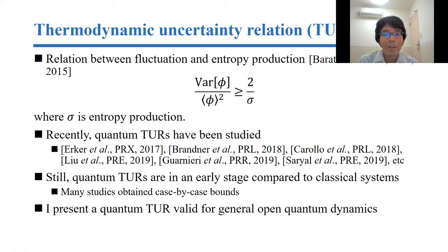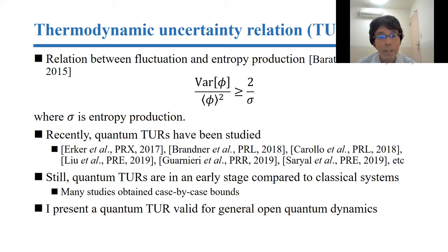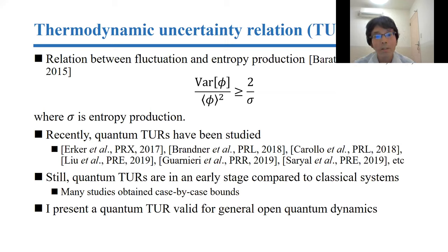As Takahiro introduced, thermodynamic uncertainty relation, TUR for short, is a relation about the fluctuation of current and entropy production. Many TURs were studied for classical Markov chains, and recently quantum extensions of TUR have been studied. Still, quantum TUR are in an early stage compared to classical systems.